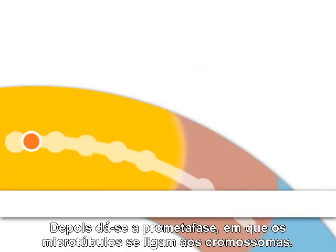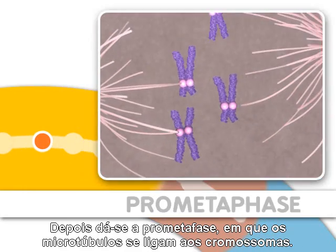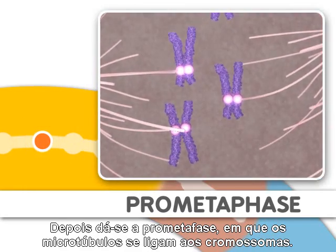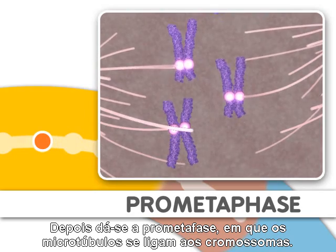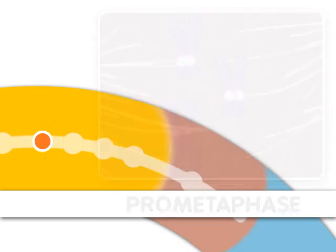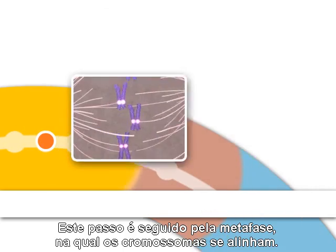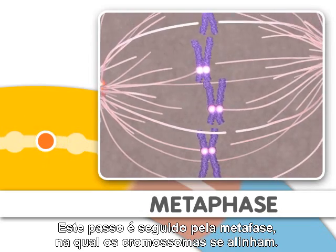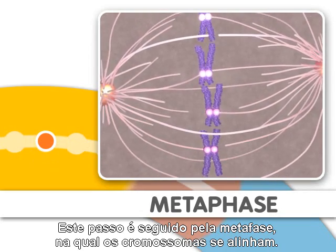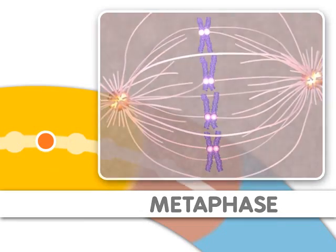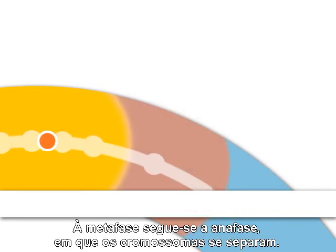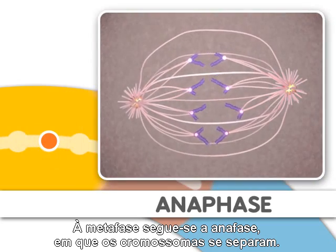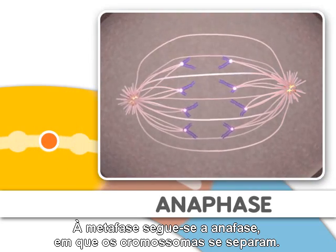Next comes prometaphase, where microtubules attach to the chromosomes. This step is followed by metaphase, where the chromosomes align. Metaphase is followed by anaphase, where the chromosomes separate.